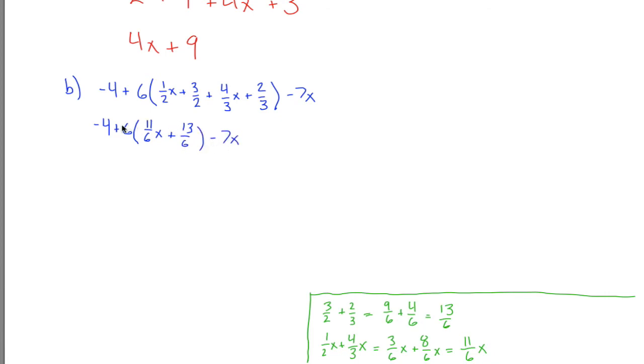And now I'll take this 6 and distribute it through to each of these two terms to get rid of my parentheses. Maybe I'll just write it here and I'll show my work off to the side. It turns out that 6 times 11 sixths x is just 11 x. And 6 times 13 sixths is just 13.